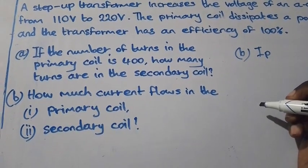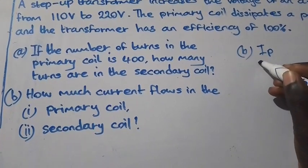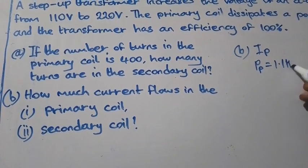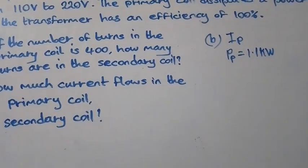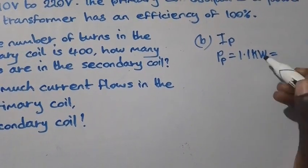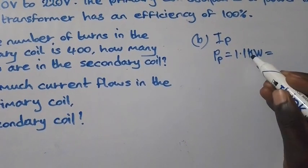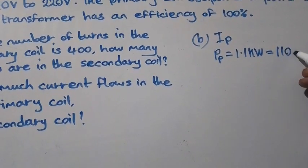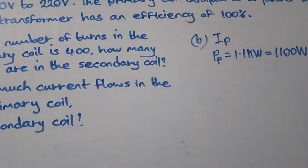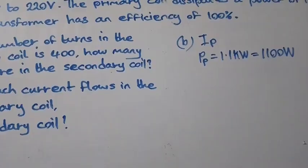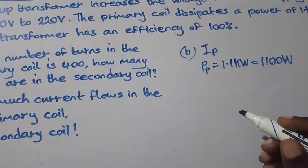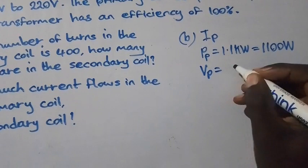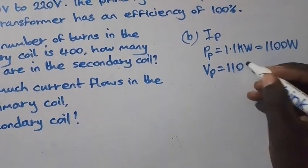Now to find IP, we have power passing through the primary coil which is 1.1 kilowatts. If we convert this into watts, kilo is 1000, so 1000 times 1.1 equals 1100 watts. And we have voltage passing through the primary coil, VP equals 110 volts.